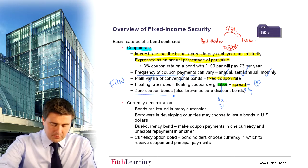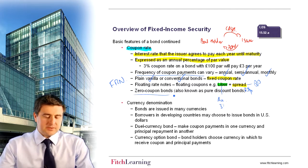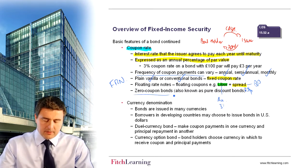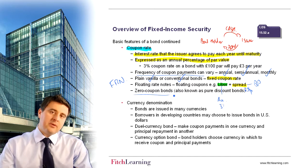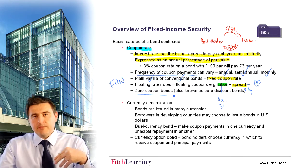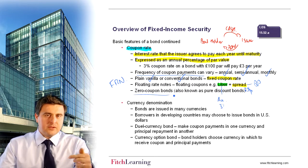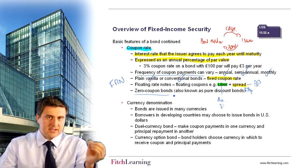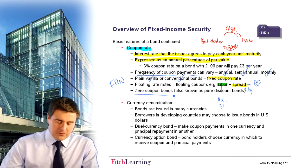Zero coupon bonds do not pay a coupon — so a 0% coupon rate — in which case you're going to buy that bond at a discount, below par value, redeem it at par value on the maturity date, and therefore make the difference between the discounted price you pay and the nominal value of the bond.